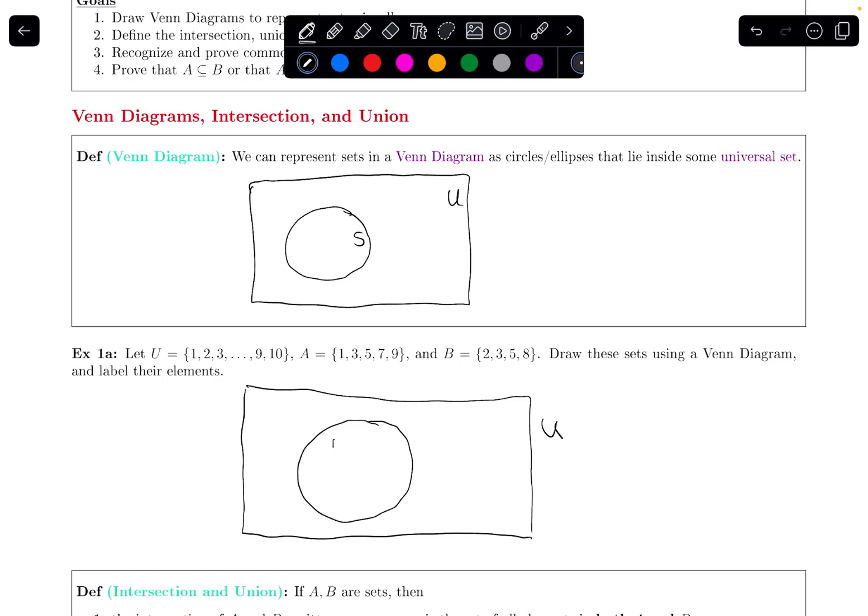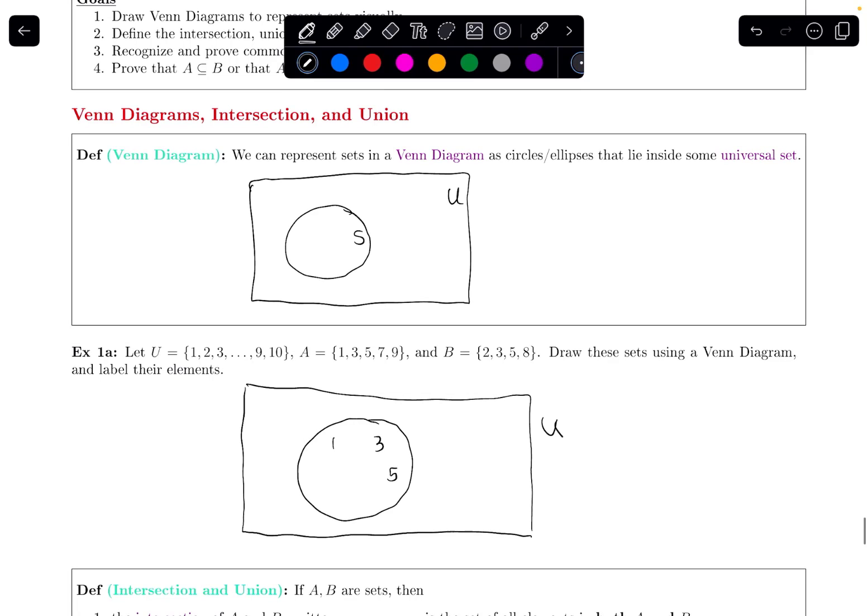So the elements that are inside of it, well, I see 1, I see 3, I see 5, I see 7, and I see 9. So that is my set A. I'm going to label that. That is A.